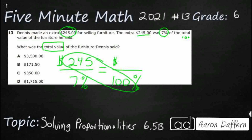Cross multiplication means 245 times 100, which gives us 24,500 — that's 245 simply with two zeros — and that is going to equal 7 times x, our mystery number. Those two should be equal.